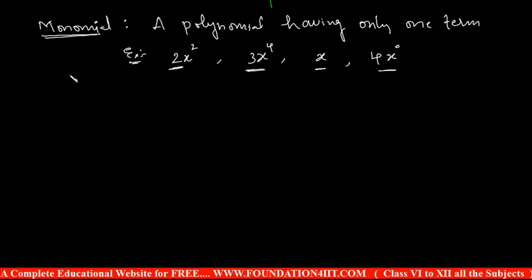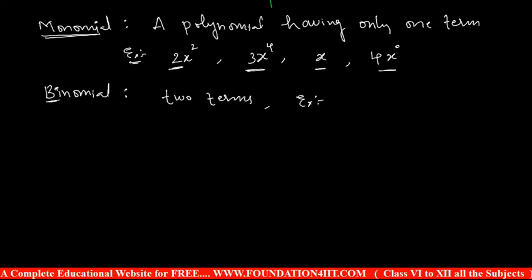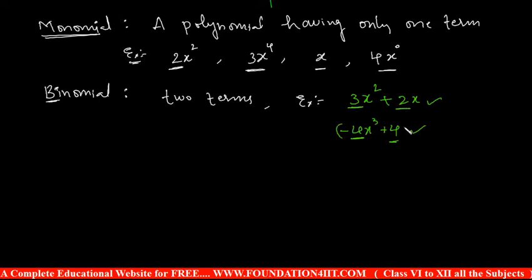Next is the binomial. Bi means two — a polynomial having two terms is called a binomial. For example: 3x² + 2x, or −4x³ + 4. These have two terms combined with plus or minus. There are two terms in each of these examples, so they are binomials.